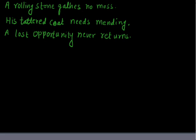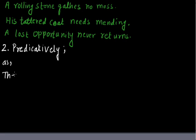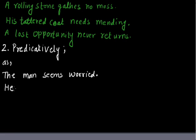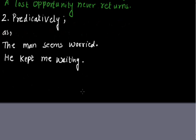One more use of the participle is that it can also be used predicatively. When I say 'the man seems worried', 'worried' is the past participle used predicatively, in place of a predicate. Another example: 'he kept me waiting' — 'waiting' is the present participle used as a predicate here in this sentence.